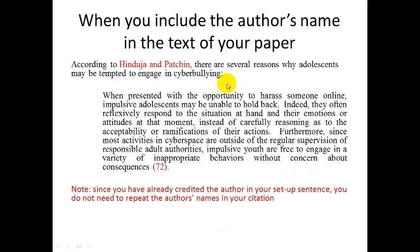Sometimes when I cite a source, I will include the author's name in the text of my paper, in my own sentence. So here's an example: instead of just jumping right to the quotation, maybe I'll say 'According to Hinduja and Patchen...' and then provide the quotation. In this case, instead of having to repeat Hinduja and Patchen in my in-text citation, notice all I have is the number 72 — the page number. I don't need to repeat the names of the authors because I already said it. If you include the author information in your own sentence, there's no need to repeat it in the in-text citation.